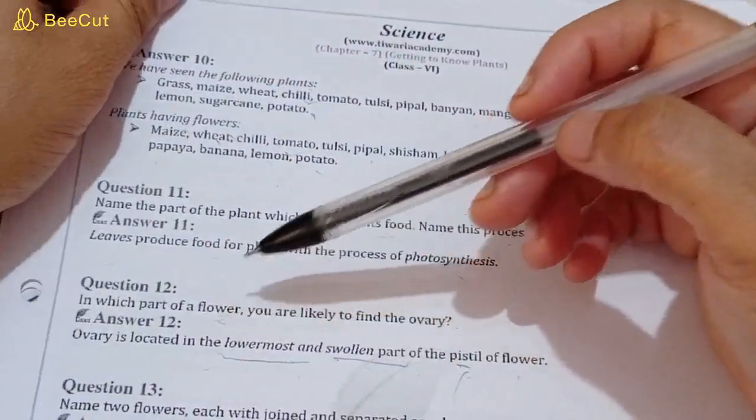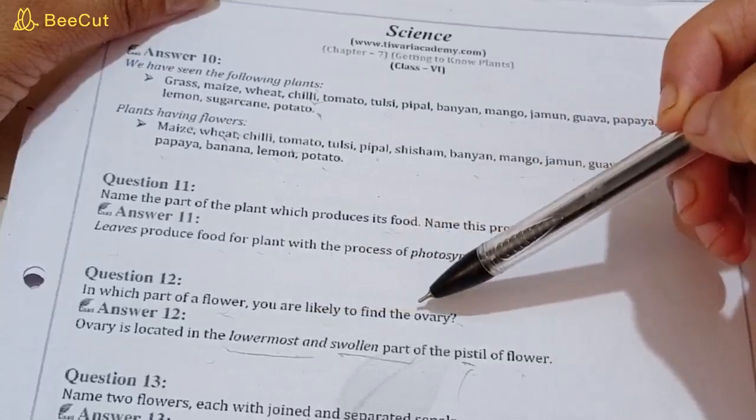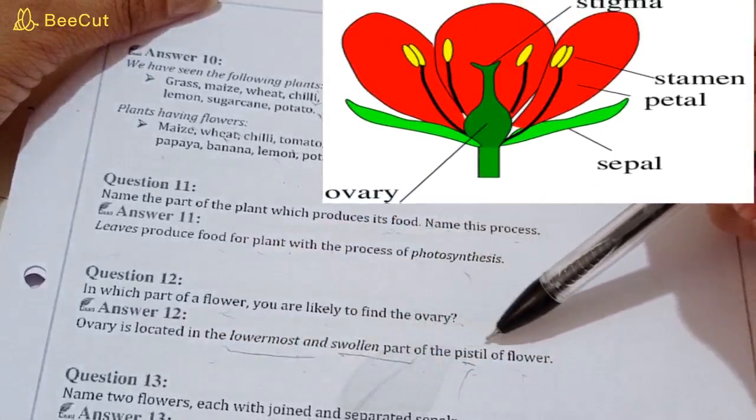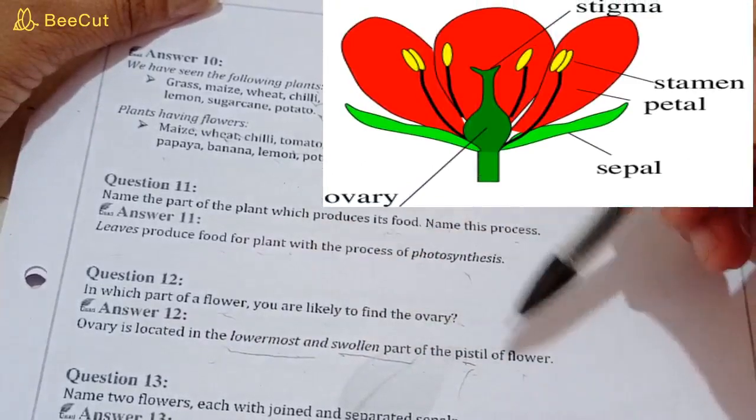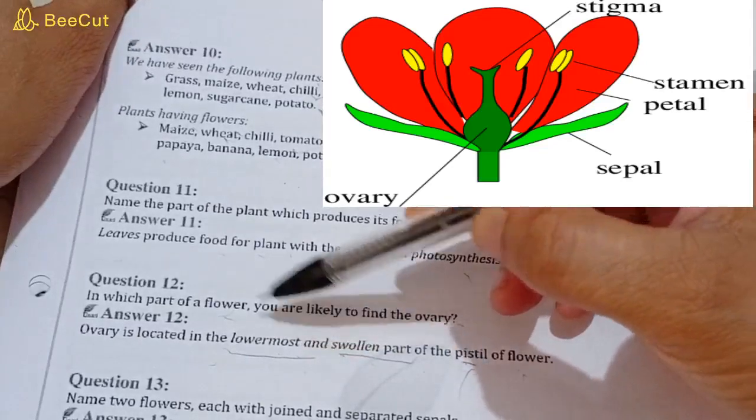Now question number twelve: in which part of a flower you are likely to find the ovary? Ovary is located in the lowermost and swollen part of the pistil of the flower. In the lowermost and swollen part of the flower, which is swollen, there is ovary present.